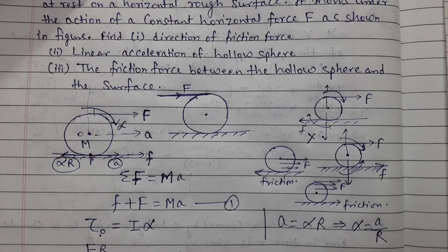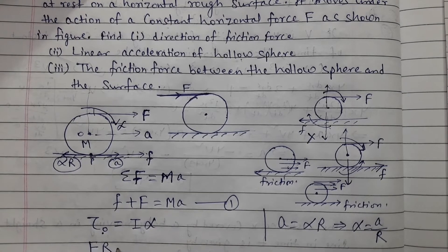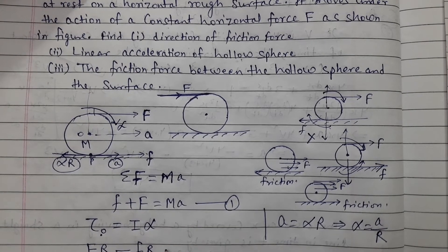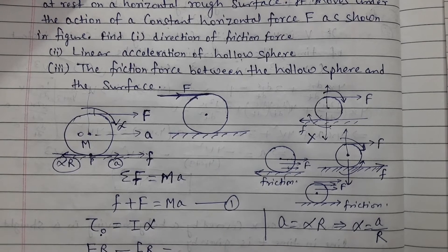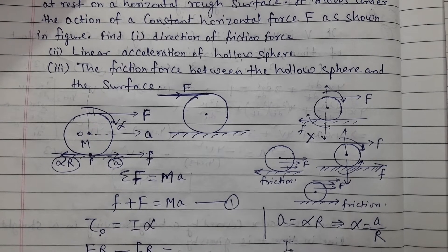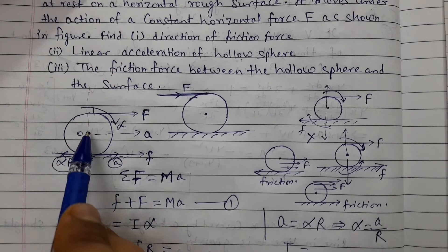From Newton's second law in the forward direction: small f plus capital F equals Ma — this is Equation 1. Now for torque about the center O: F into R minus friction force torque, small f times R, equals I times alpha.